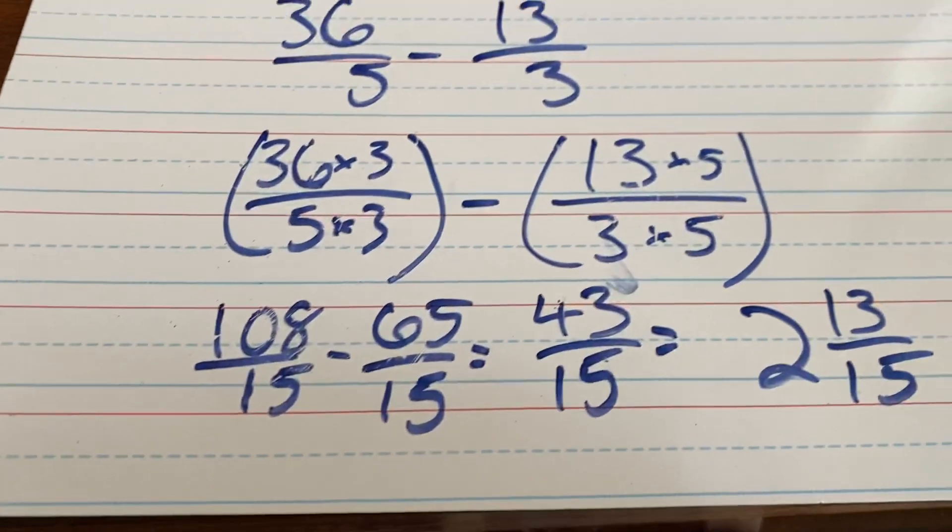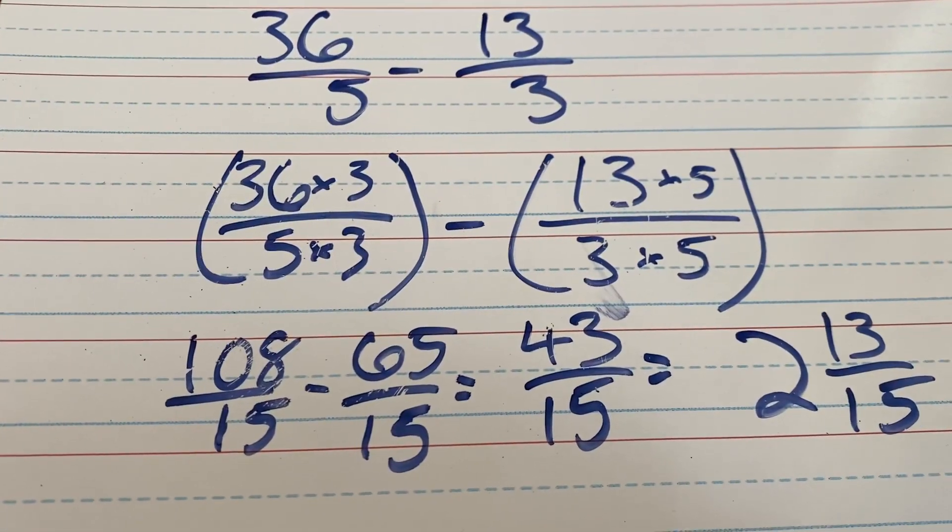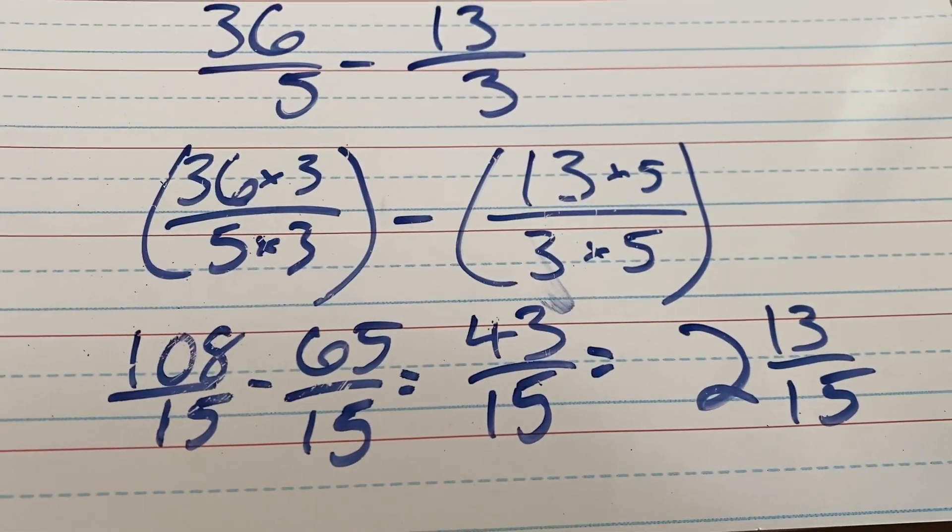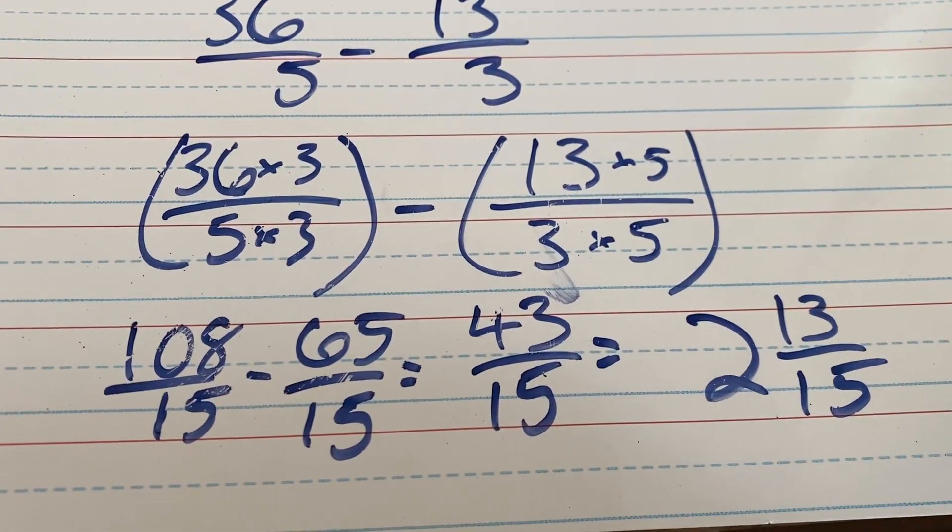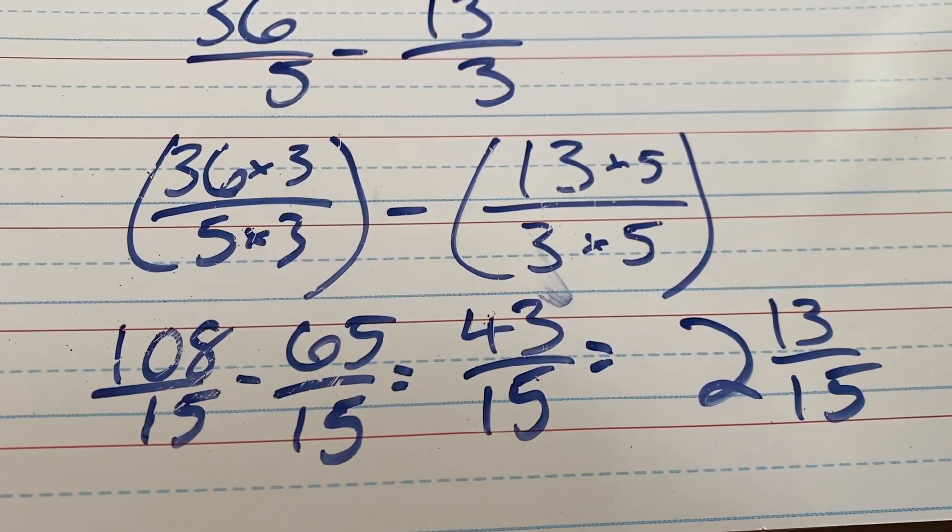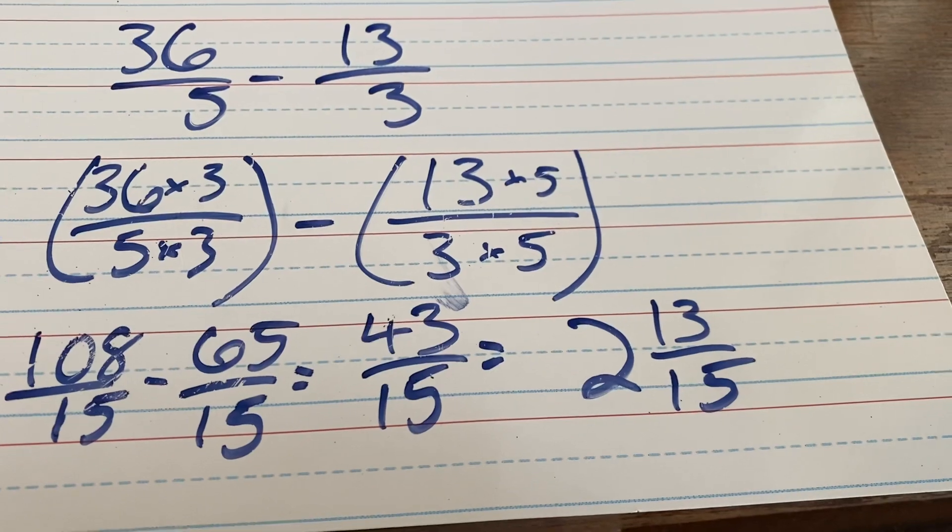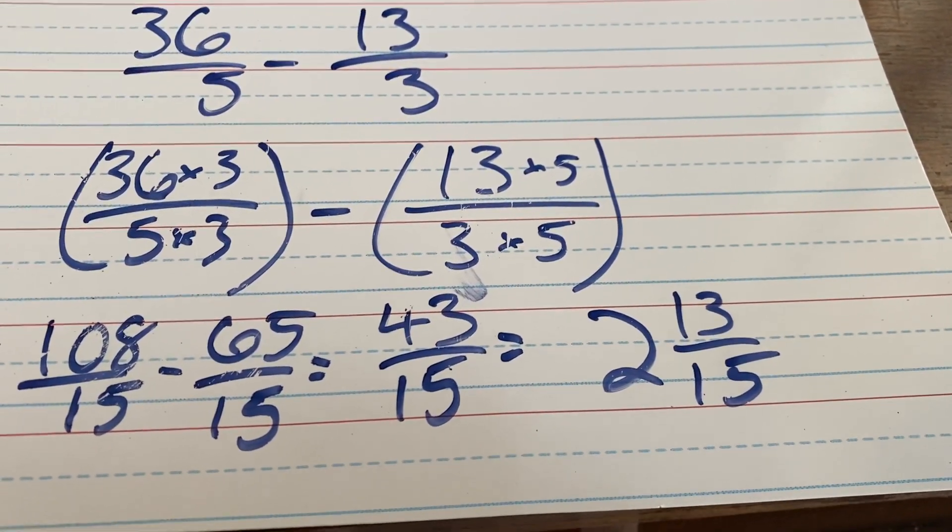So, here are the fractions we are left with. 108 over 15 minus 65 over 15. You can take away 65 from 108 to get your remaining numerator, 43/15. That is still an improper fraction, so rewriting it as 2 and 13/15.